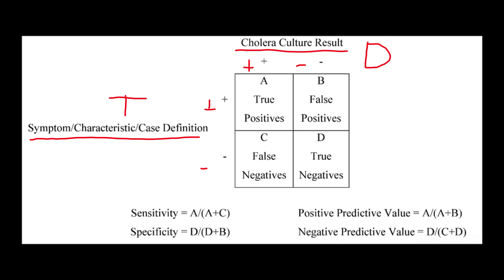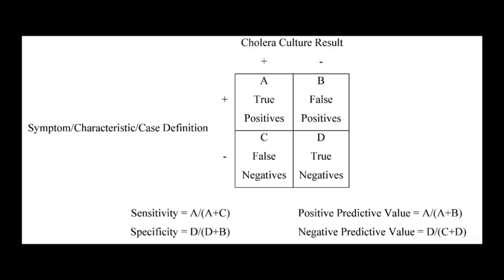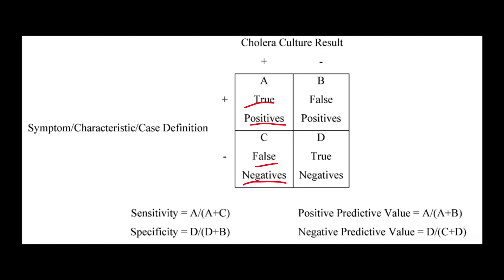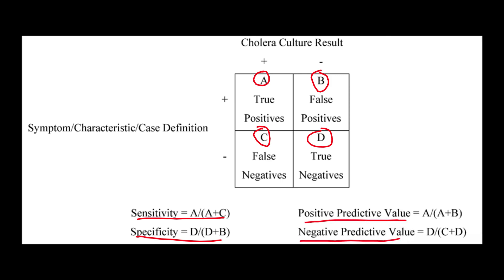The way I like to remember this is I like football. In football, you want to get touchdowns — TDs — so test on the left, disease on top, positive, negative, positive, negative. If you set it up like that every time, you're going to be very successful with these questions. It mentions things like true positive and false negative, which are very important and high yield. I'm going to focus on the letters A, B, C, D, and how we're going to be doing our calculations.